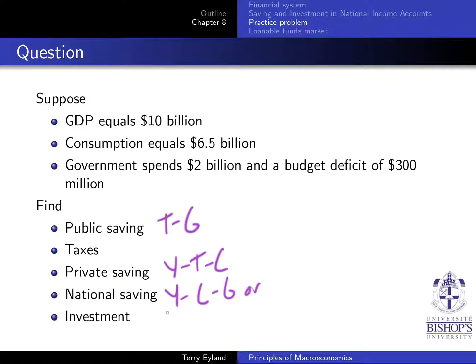What is investment? It's equal to national saving — the same amount — because we know national saving has to equal investment. So once we find national saving, we find both. Once we find the first three, the last two are really quick.